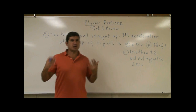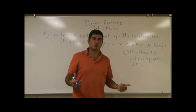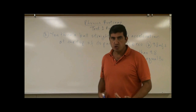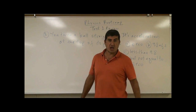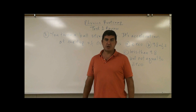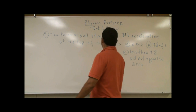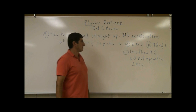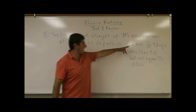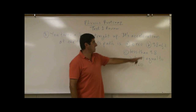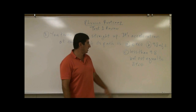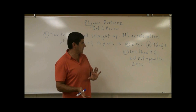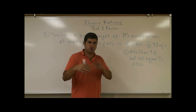This is a question very often misunderstood and missed during tests by introductory physics students. A lot of students put zero — they would put choice A. Choice B says 9.8 meters per second squared. Choice C says the acceleration is less than 9.8 but not equal to zero.